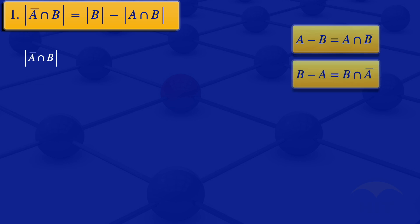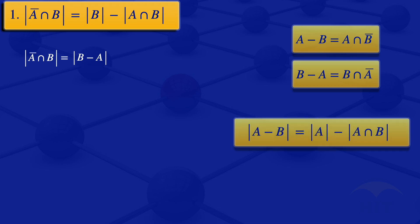So that gives us the set difference B minus A equals B intersection A complement. Therefore the cardinality of A complement intersection B equals the cardinality of the set difference B minus A. We also have another result which says that the cardinality of A minus B equals the cardinality of A minus the cardinality of A intersection B. Interchanging A and B in that result, the cardinality of B minus A equals the cardinality of B minus the cardinality of A intersection B, which is what was required.